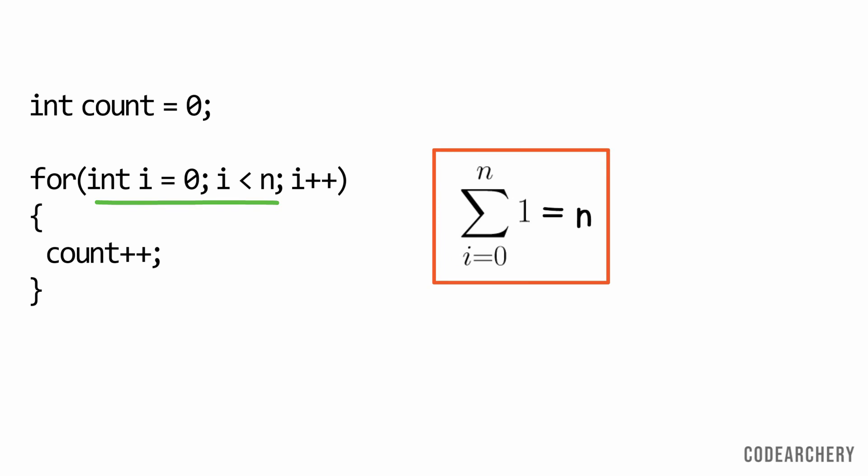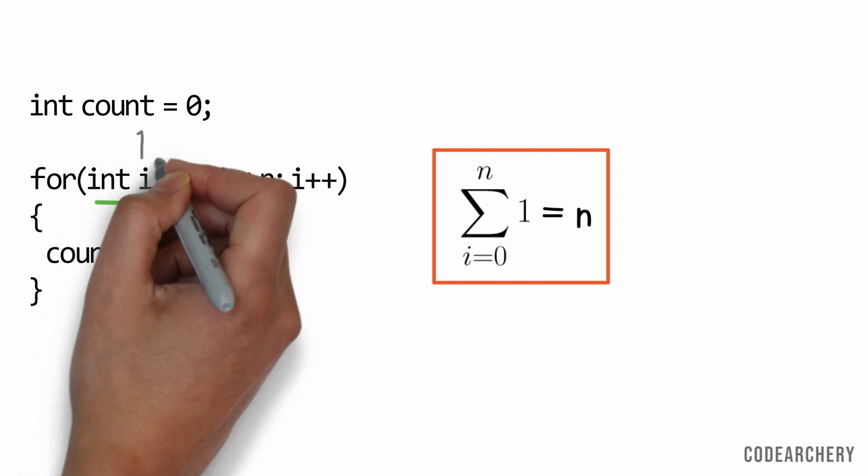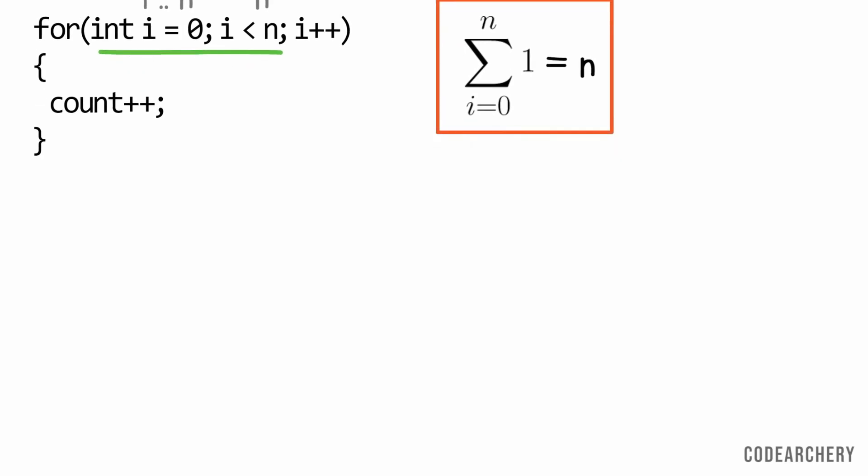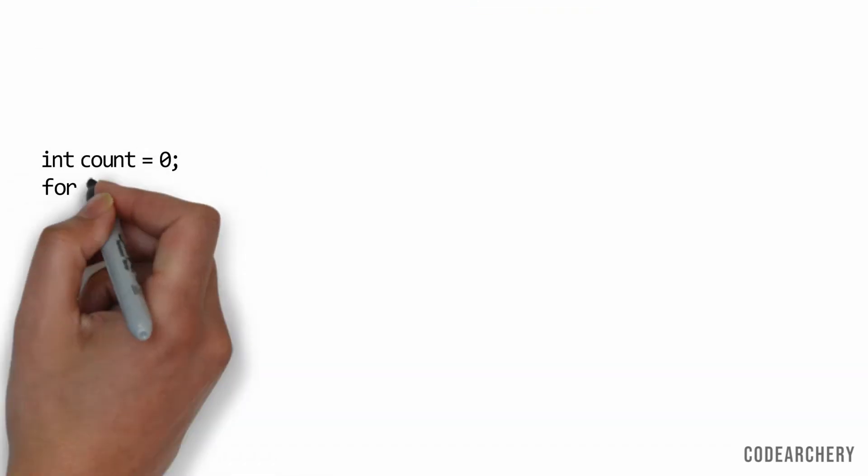You don't even have to do summation of this example. If you just observe the for loop you will know that since the loop goes from 1 to n, so its time complexity is going to be n.